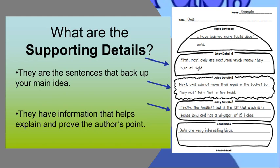Now, let's read this paragraph together. I have learned many facts about owls. First, most owls are nocturnal, which means they hunt at night. Next, owls cannot move their eyes in the socket, so they must turn their entire head. Finally, the smallest owl is the elf owl, which is six inches long and has a wingspan of 15 inches. Owls are very interesting birds. Did you notice that the whole paragraph is about owls? Did you notice that the supporting details are stating facts about owls?